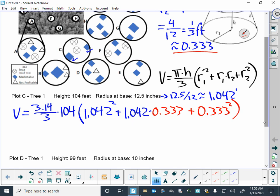So if we do those calculations along the way, this number out in front here, if I do 3.14 times 104 and divide that by 3, this number that I get out front here is 108.85. And if I add these all up in the middle—1.042 squared plus 1.042 times 0.333 plus 0.333 squared—I get on the inside here a 1.544 approximately.